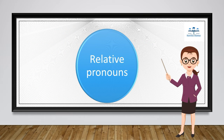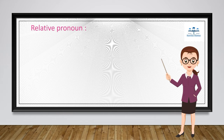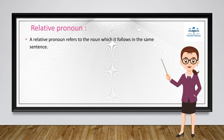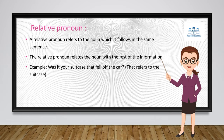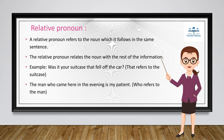Relative pronouns refer to the noun which they follow in the same sentence. A relative pronoun relates the noun with the rest of the information in the sentence. For example: 'Was it a suitcase that fell off the car?' — here 'that' refers to 'suitcase'. 'The man who came here in the evening is my patient.' — here 'who' refers to 'the man'.